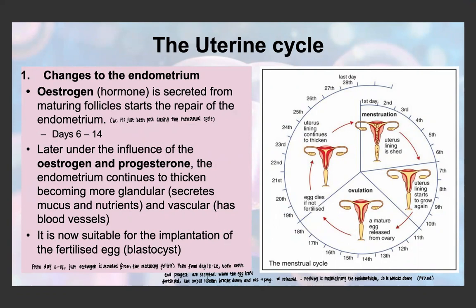When the egg isn't fertilized, the corpus luteum breaks down and estrogen and progesterone stop being released. Because these hormones are no longer released, there's nothing maintaining the endometrium wall or causing it to keep thickening and growing more vascular. Since there's nothing supporting it, the endometrium is lost — and that's when we have our period. The menstrual cycle is counted as starting when menstruation occurs, so day one is the first day of menstruation.